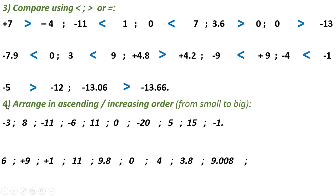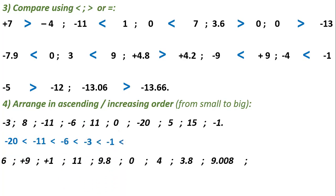Exercise number four: arrange in ascending or increasing order, from smallest to biggest. First come the negatives, farther from zero being smallest: minus 20 is less than minus 11, less than minus 6, less than minus 3, less than minus 1. Then comes zero. Then positive numbers, nearer to zero being smaller: 5 is less than 8, less than 11, less than 15.